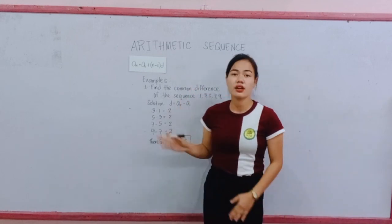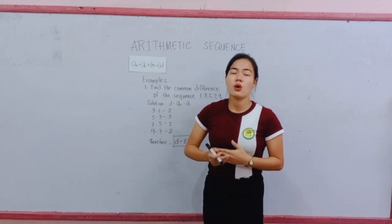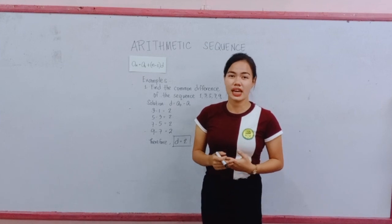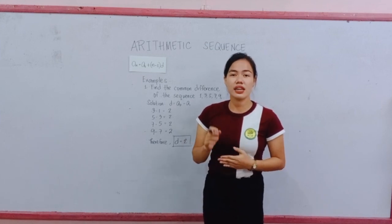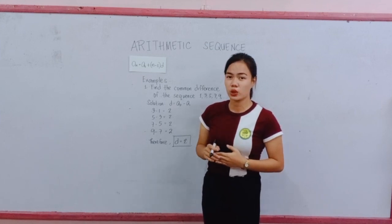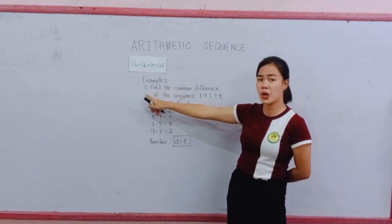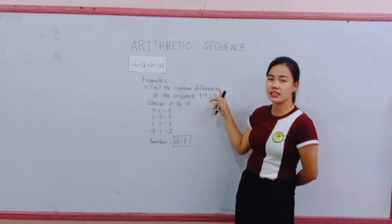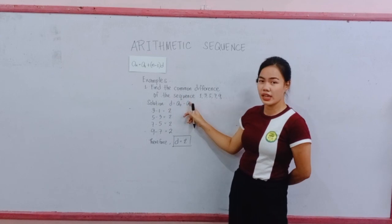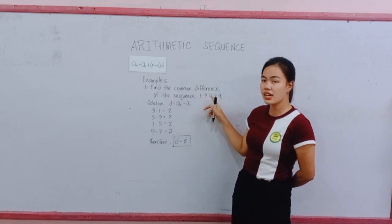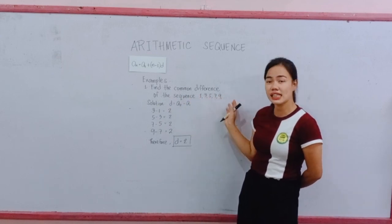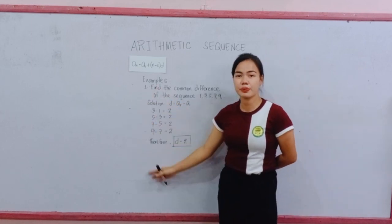Examples. For example number 1, we will discuss on how to get the common difference if it is not available. Number 1. Find the common difference of the sequence 1, 3, 5, 7, and 9. This is the process.